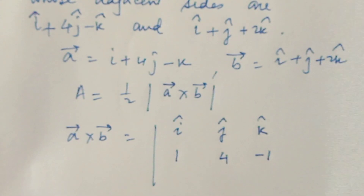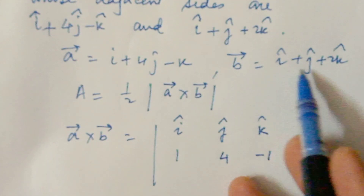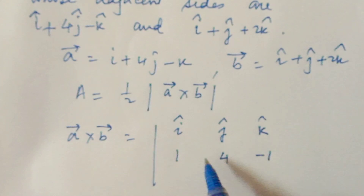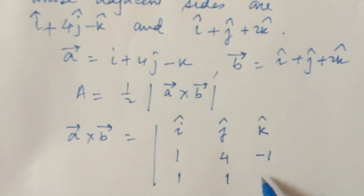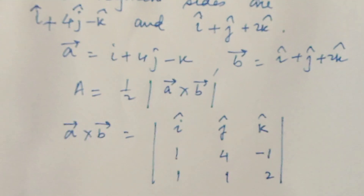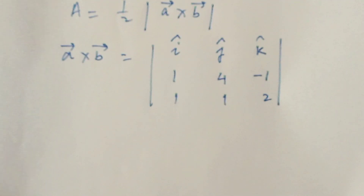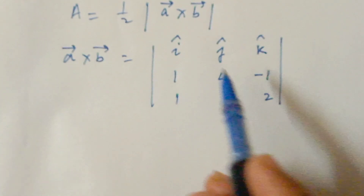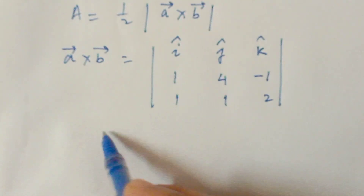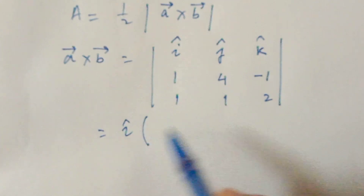Write i, j, k in the first row. The components of the first vector a are 1, 4, minus 1. The components of the second vector b, which is i plus j plus 2k, are 1, 1, 2.